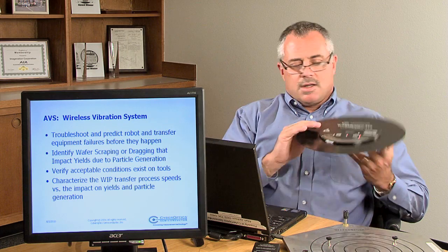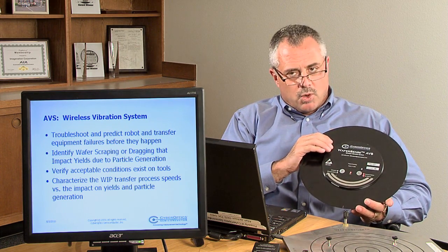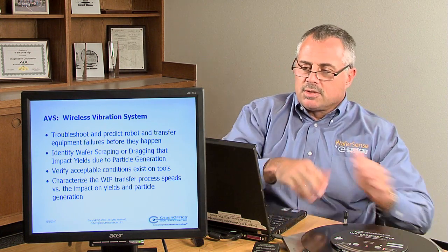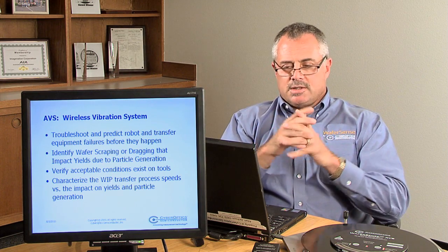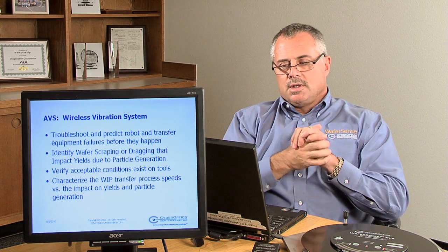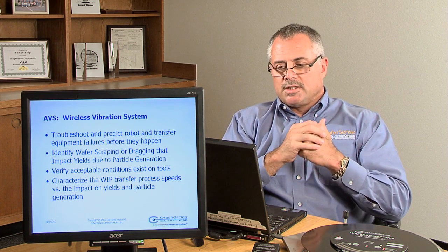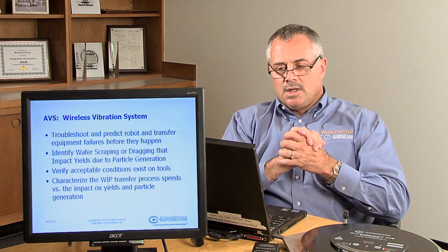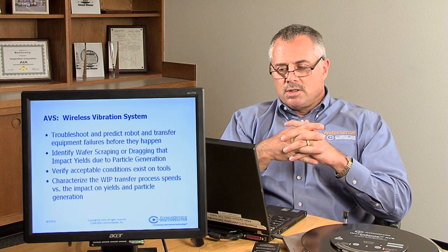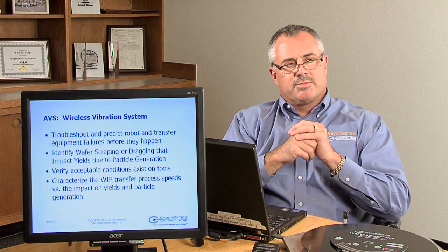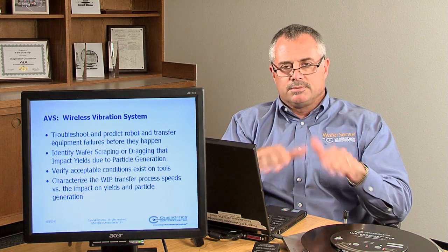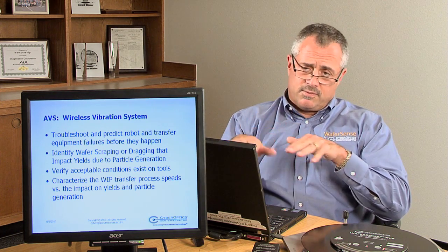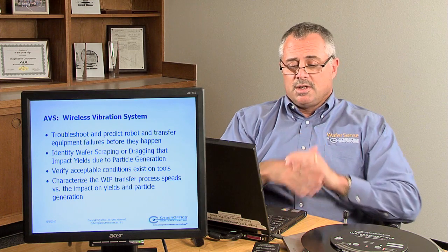The benefits that AVS provides are very important and very meaningful for equipment maintenance. AVS is used to troubleshoot and predict robot transfer failures before they happen, because it will pick up ball bearings going loose. It identifies wafer scraping and dragging that impacts yield, causing particle generation and wafer damage. It verifies acceptable go-no-go tool conditions and can characterize transfer process speeds to analyze increasing throughput and the effect on wafers.